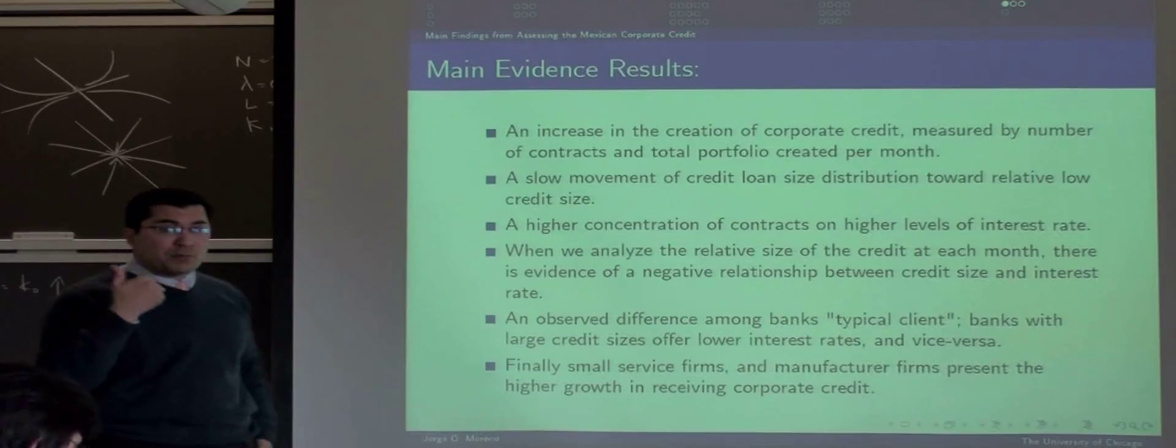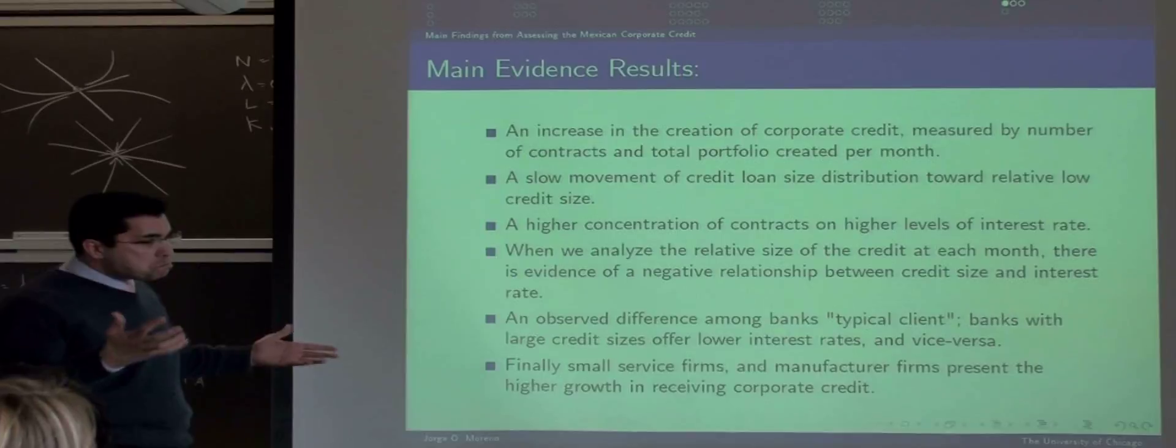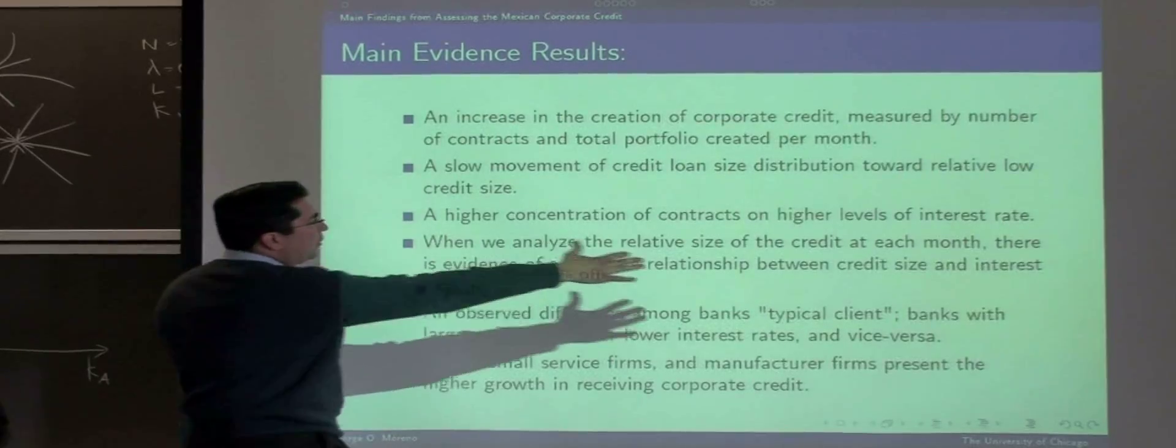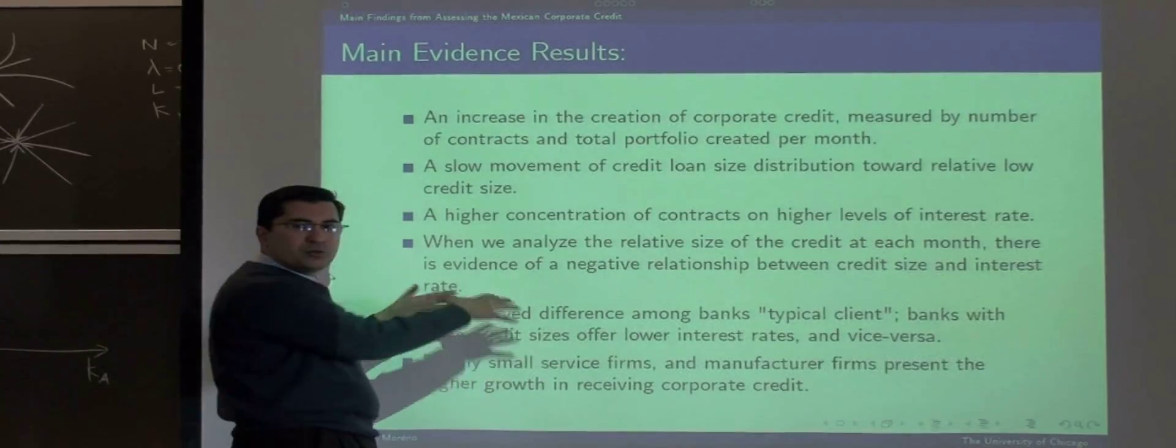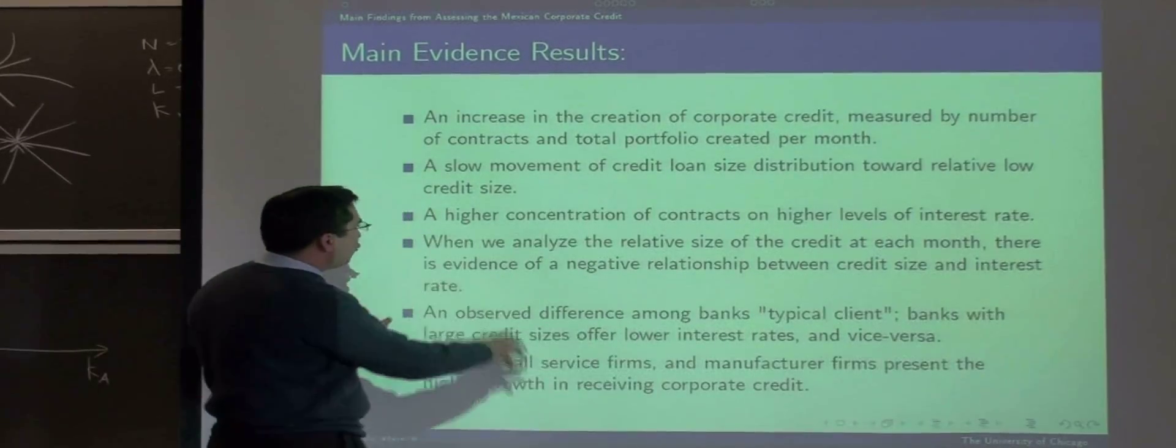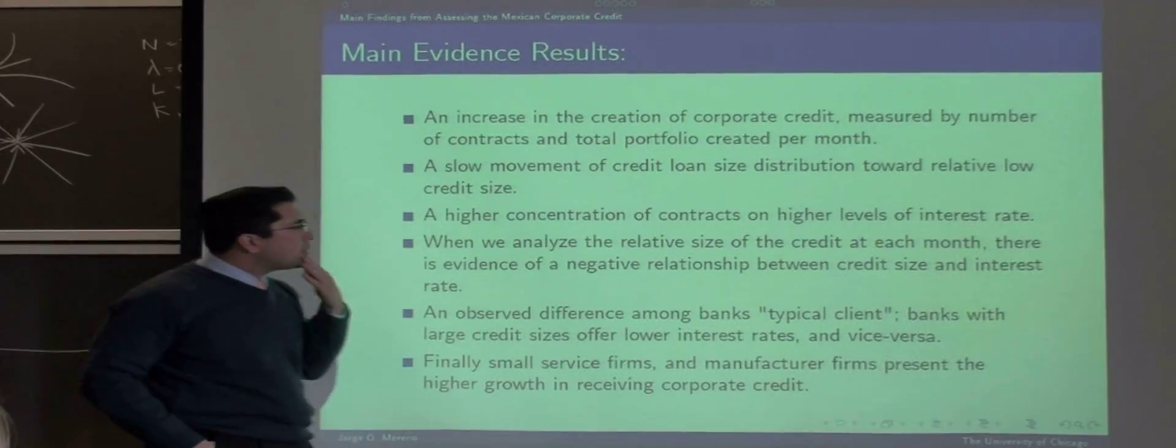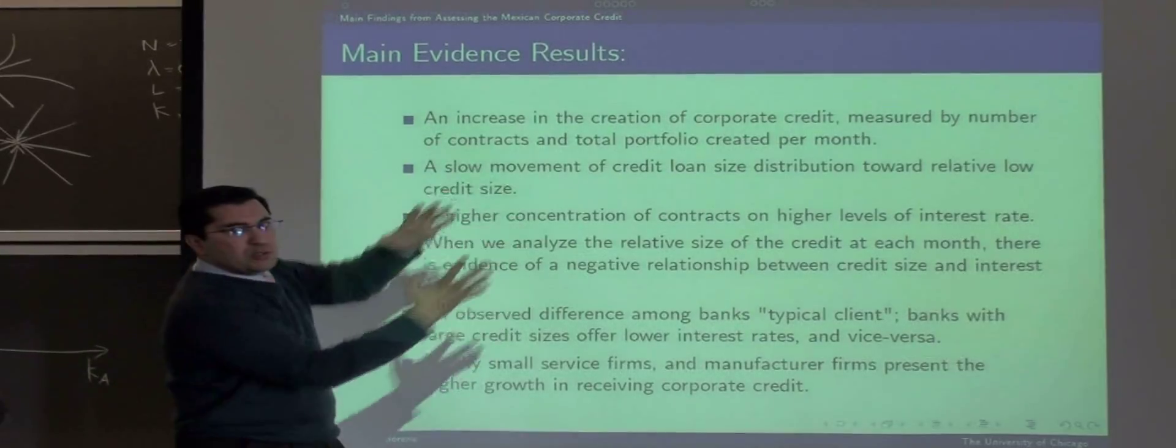We found from the data an increase in the creation of corporate credit, measured by number of contracts or total portfolio. A slow movement of credit loan size distribution toward relative low credit. So, we have a mass in low relative credit. A higher concentration of contracts on higher levels of interest rate because the whole distribution is moving up.